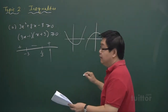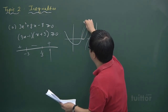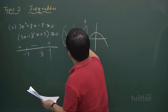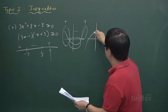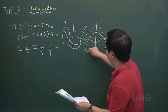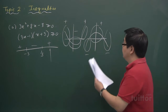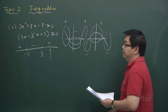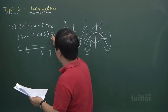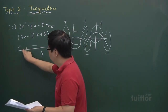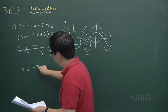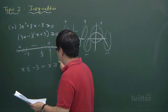If the curve opens downward, the pattern reverses: minus, plus, minus. So the sign alternates. Since we are looking for values where the expression is greater than zero, we look at the positive regions. Therefore x is less than or equal to minus 3, or x is greater than or equal to one third.